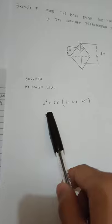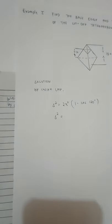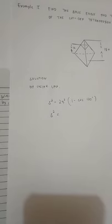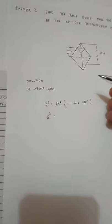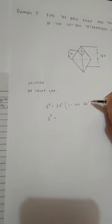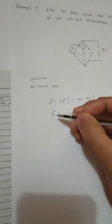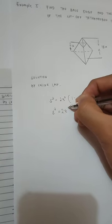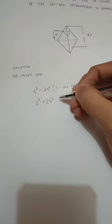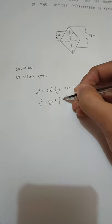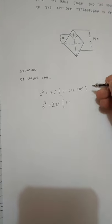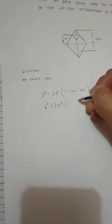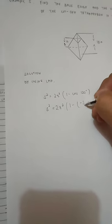we have S squared equals to 2Z squared times 1 minus cosine 120 degrees. So we have S squared equals to 2Z squared times 1 minus, the cosine of 120 degrees is negative 1 half.